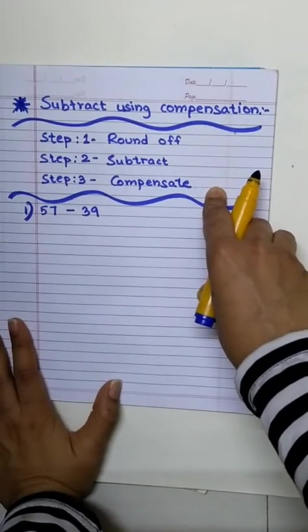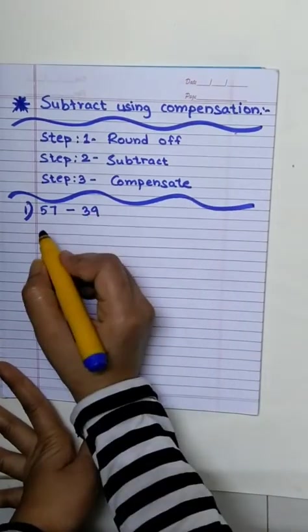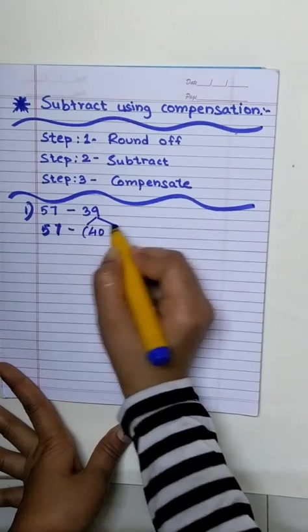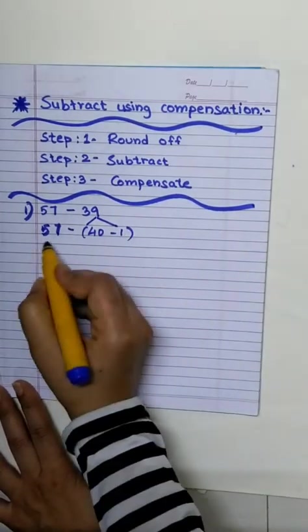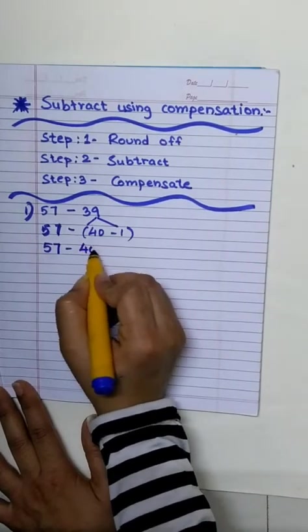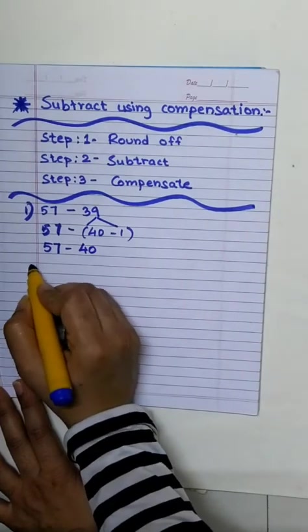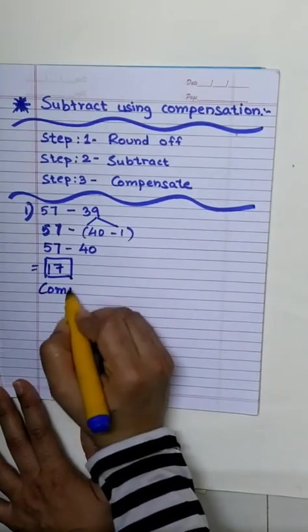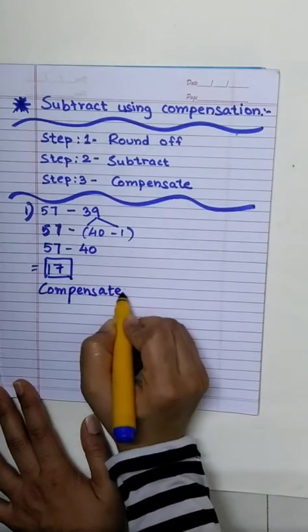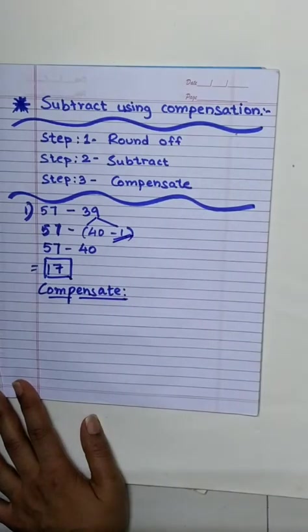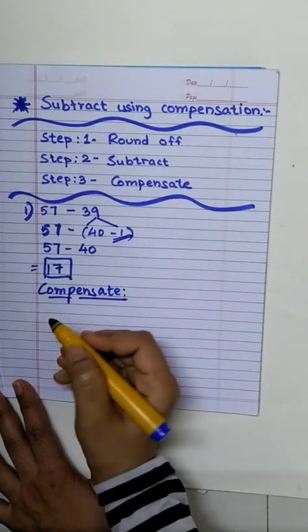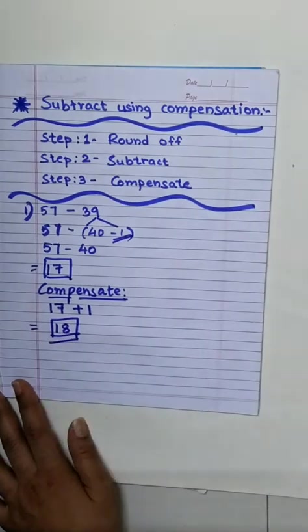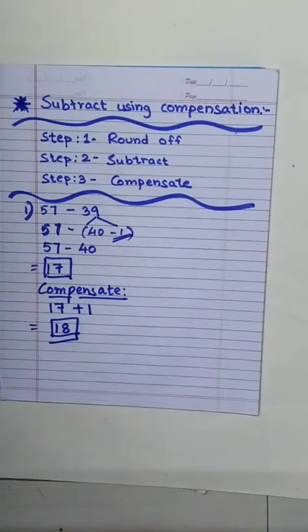57 minus 39. Here, we will round off 39. Let's write 57. Now, we can round off 39 by making it 40 minus 1. Right? So, we will subtract 40 from 57 to make the calculations easy. The answer will be 17. Right? But is this the final answer? No. Now, now is the turn to compensate. We subtracted 1 earlier. So, now we will be adding 1 to our difference. Now, 17 plus 1 is 18. 18 is our final difference. Easy. Isn't it? So, 57 minus 39 is 18.